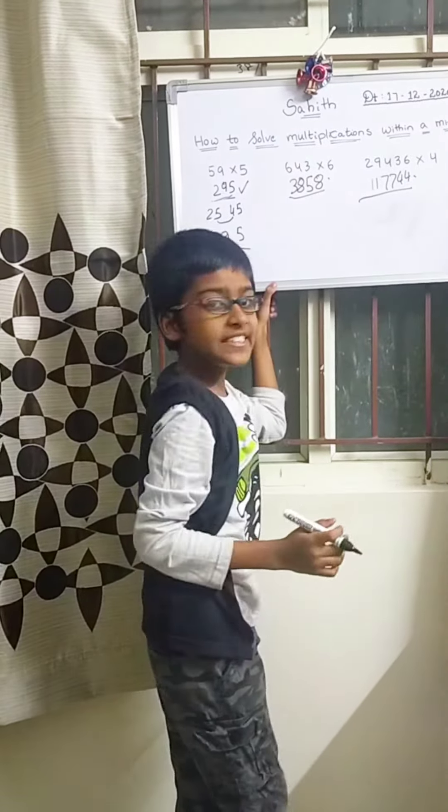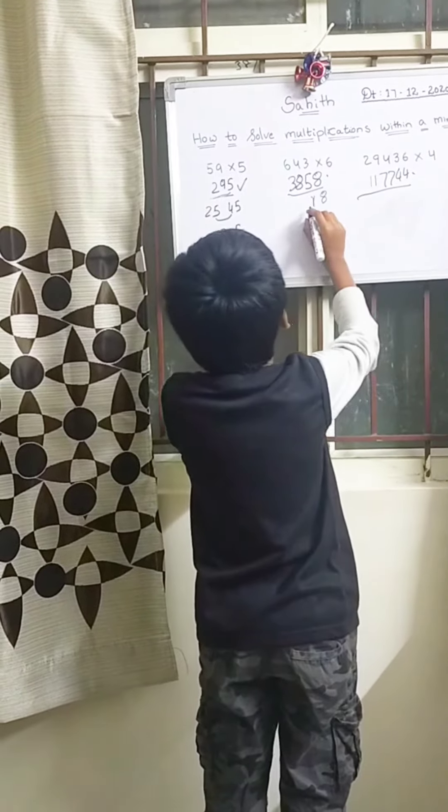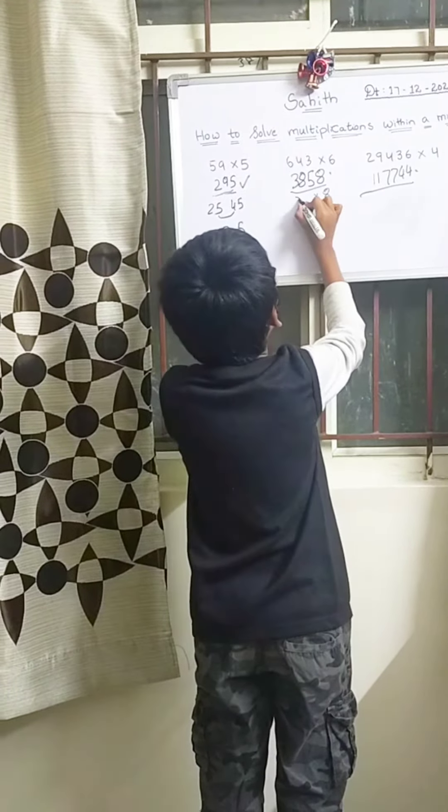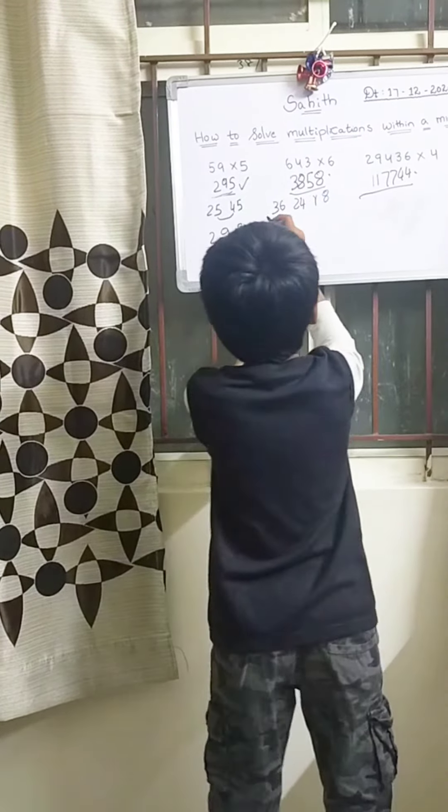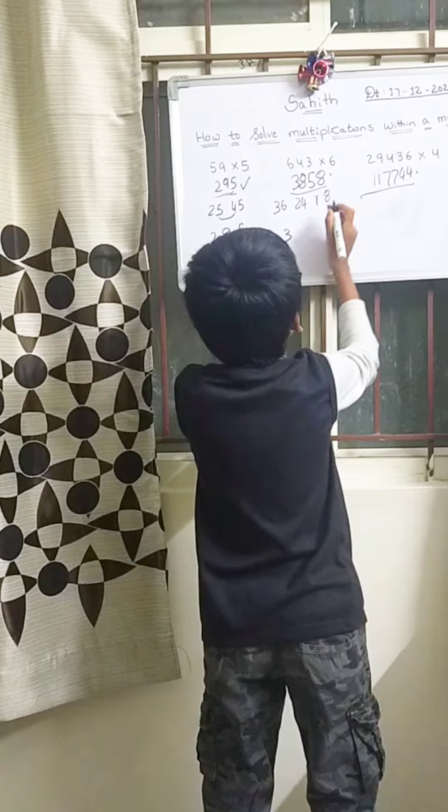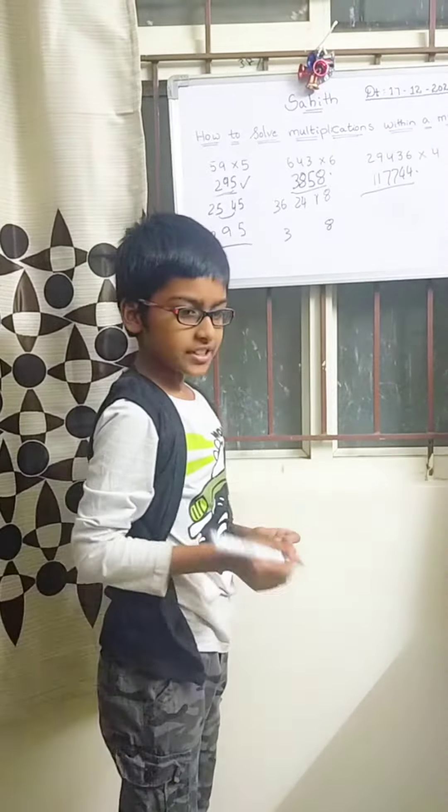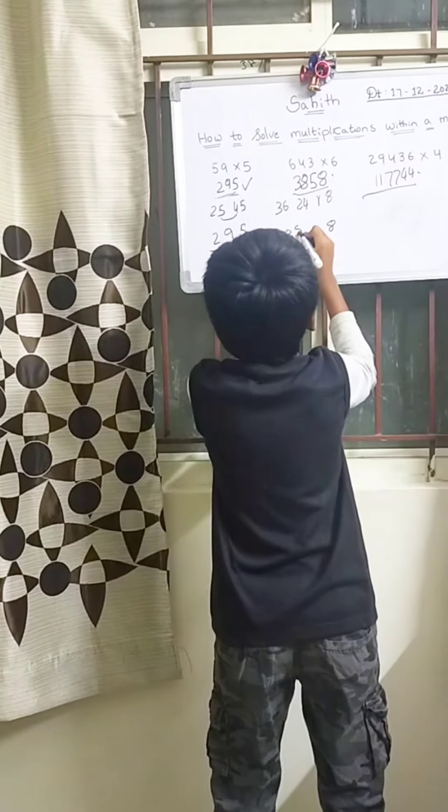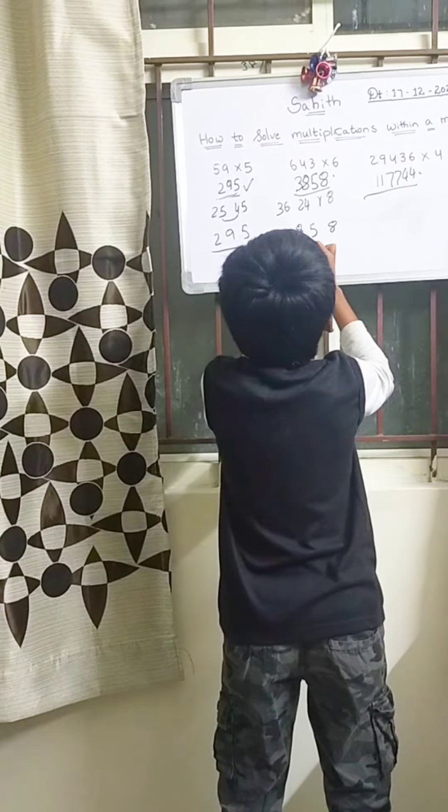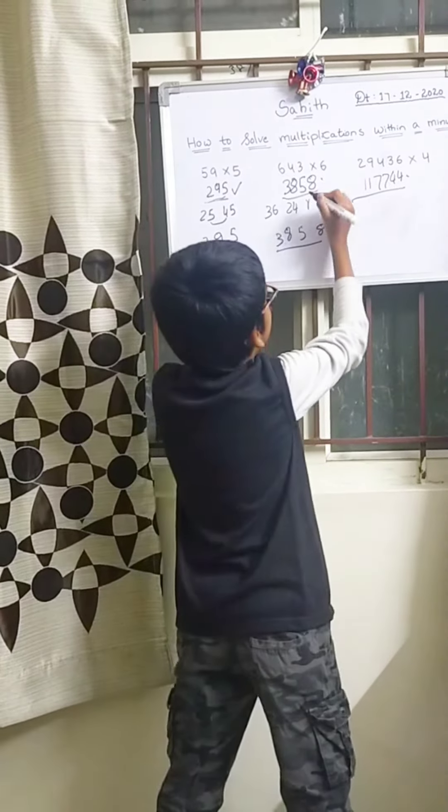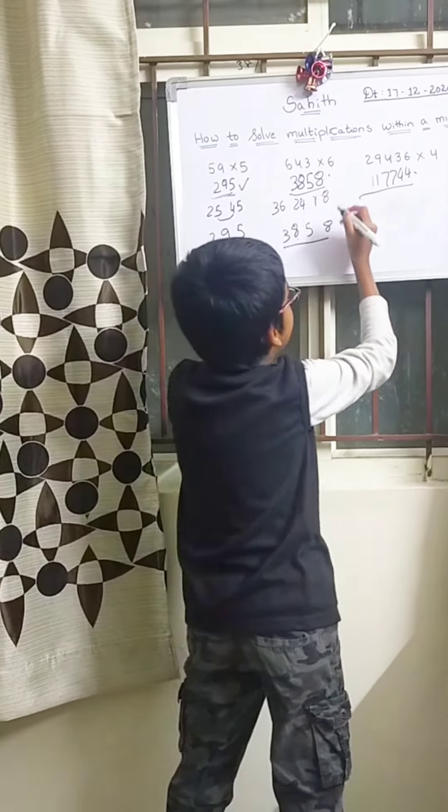643 multiplied by 6. 6 threes are 18. 6 fours are 24. 6 sixes are 36. Now let's take 3 down and 8 also down. 6 plus 2 is 8. 4 plus 1 is 5. You can check with the one above: 3858.